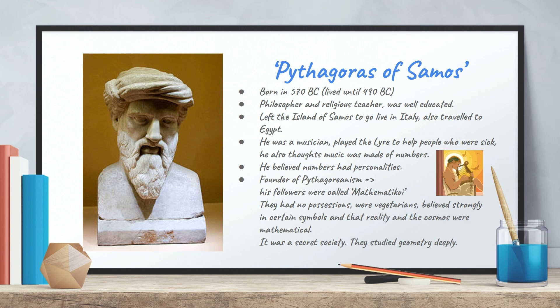So he was a musician. He played the lyre. You can see the instrument depicted on the right to help people who were sick. He had a strong belief that musical instruments and musical notes were reflected with numbers, and he also believed that numbers had personalities and genders, like male, female, and perhaps the number 10 had a personality based on triangulation. It was the sum of 1 plus 2 plus 3 plus 4, which is incredible.